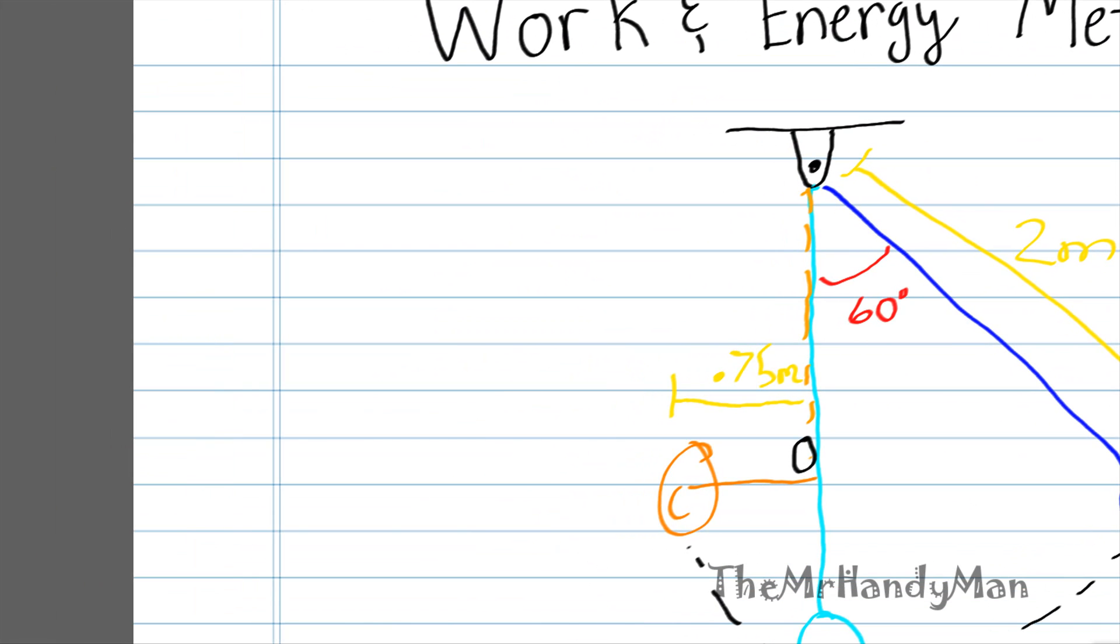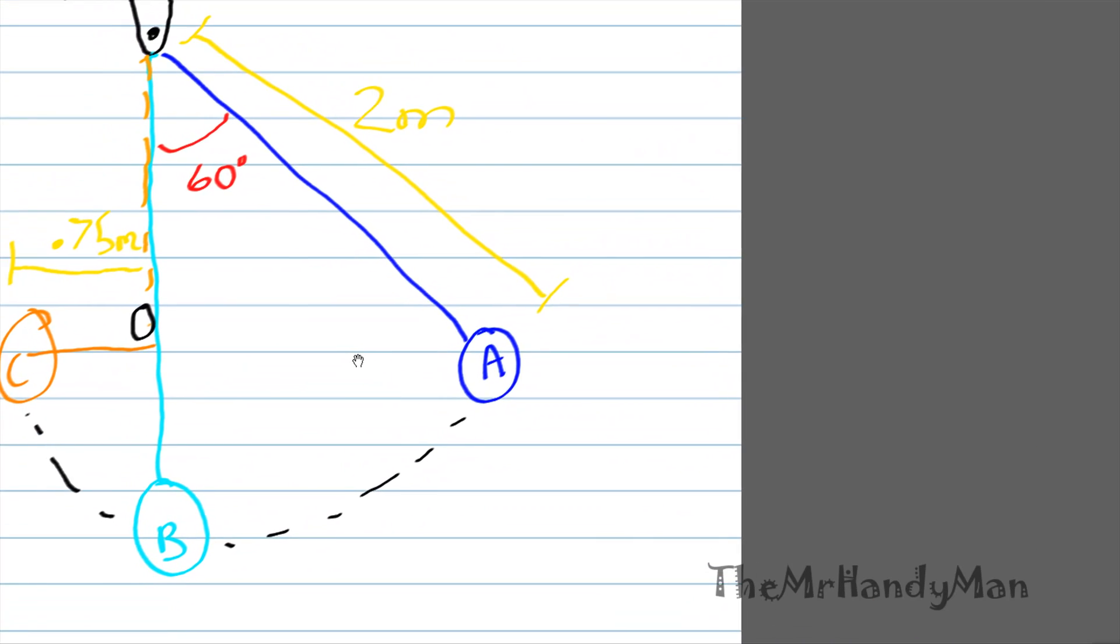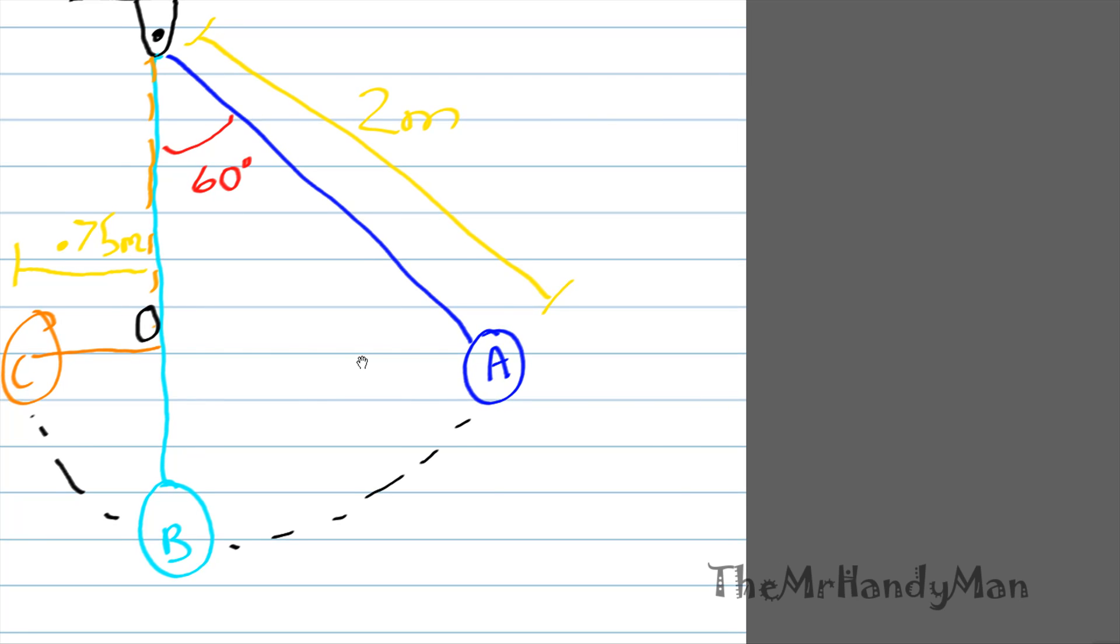We're going to start off with A. For A, what we're going to assume is that the velocity is zero, and that the height is...